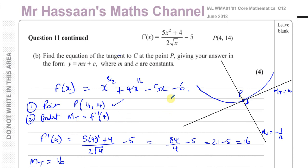That concludes this question from June 2018. Part a was integration, and part b was more like differentiation, finding the equation of the tangent. If you'd like to watch other questions from this paper or on integration and differentiation from P1, click on the playlists at the end of the video. Thank you for watching and see you soon.